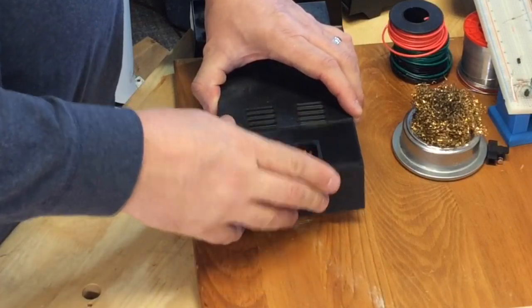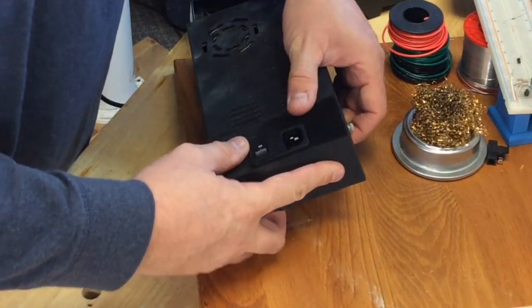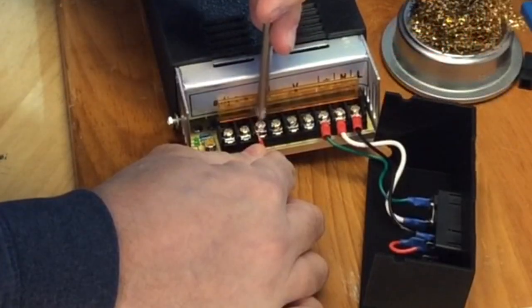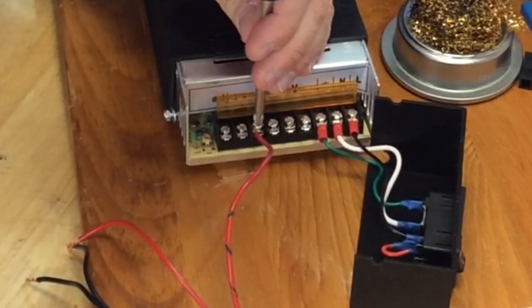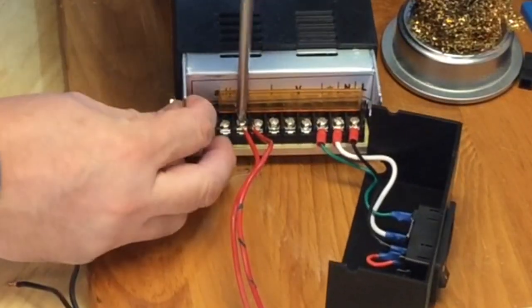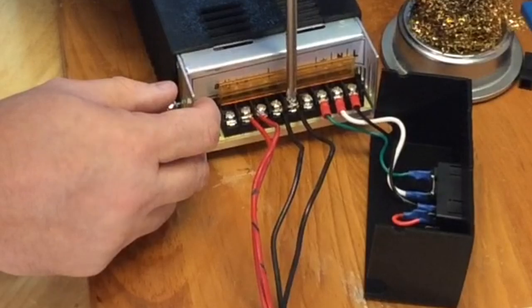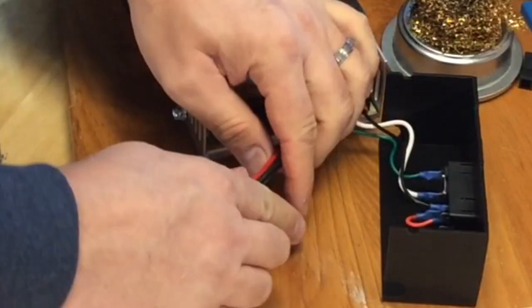I bent the wires so they would flex, and then I test fit this into place. Everything was looking good, so now I needed to install the DC side of the connections. This is the harness that actually goes over to the Arduino and RAMPS module. So there's two red wires, like I talked about in the schematics, and two black, but they're all connected here.